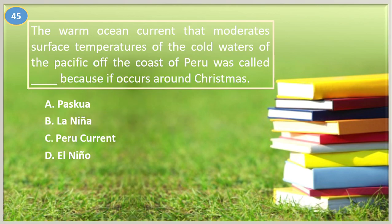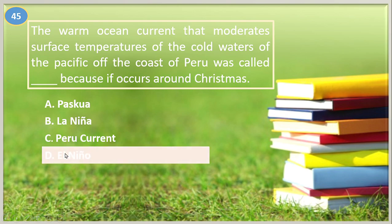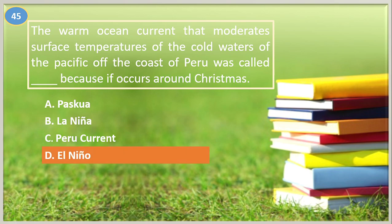Number forty-five. The warm ocean current that moderates surface temperatures of the cold waters of the Pacific off the coast of Peru was called blank because it occurs around Christmas: A. Pascua, B. La Niña, C. Peru current, D. El Niño. The answer is El Niño.